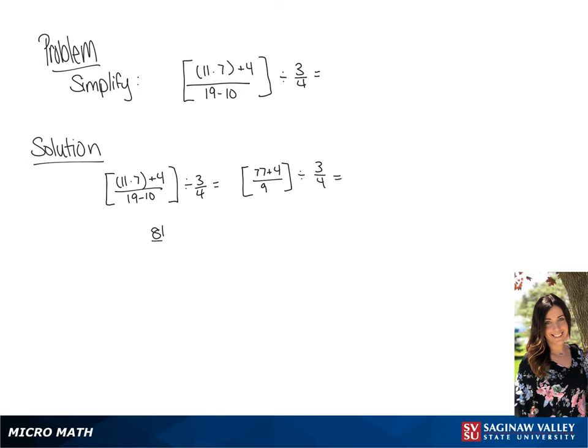We can further simplify the brackets to 81 over 9, divided by 3 over 4.